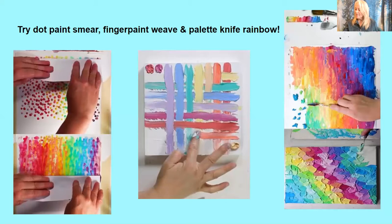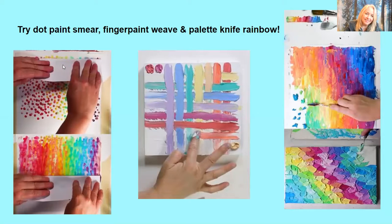This project is called dot paint smear. All over your paper, you just make little dots. Then you take a piece of paper, fold it really sharply, and use it like a scraper — just gently pull it down. It makes this interesting, colorful effect, like a raining rainbow.